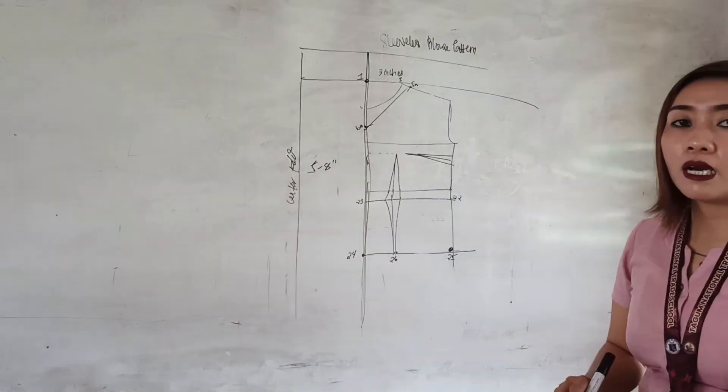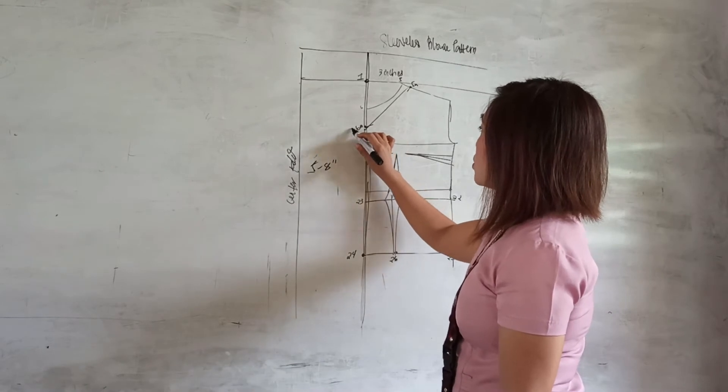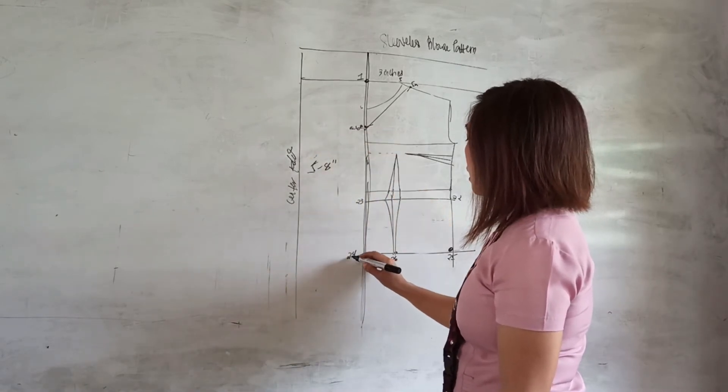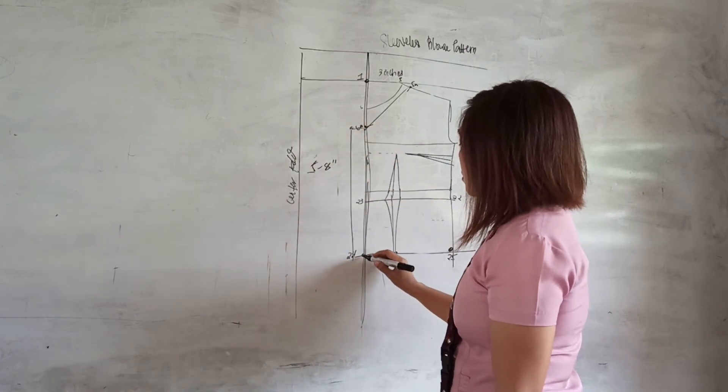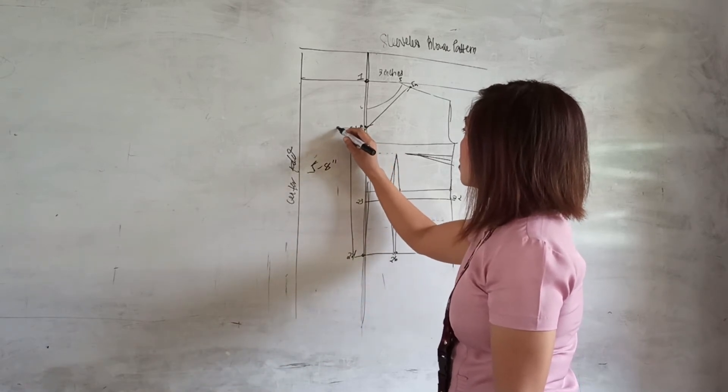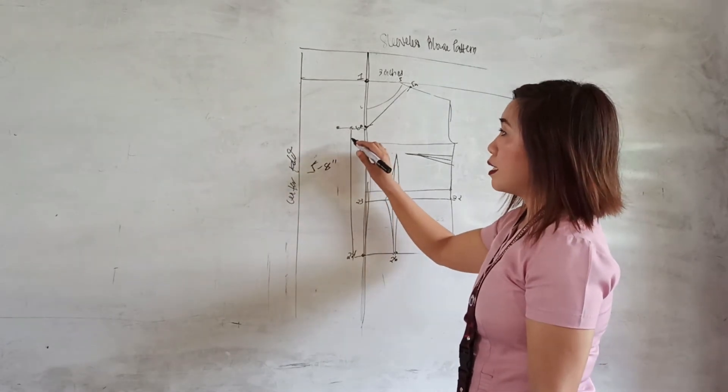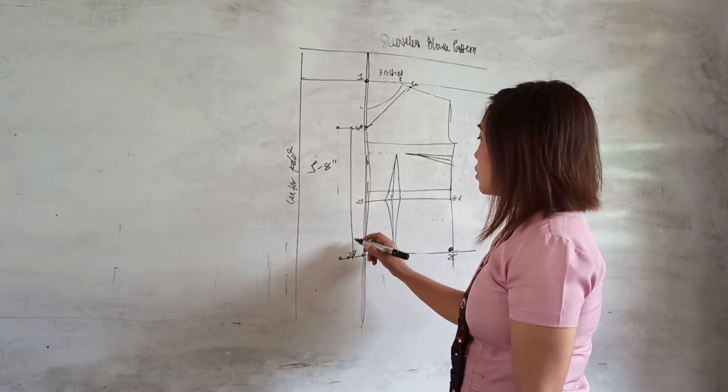From your point 16a, you measure outward three-fourths and another three-fourths. Again, please refer to the points or labels in our module. There are two three-fourths in here.